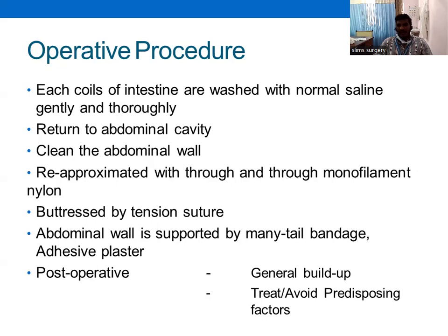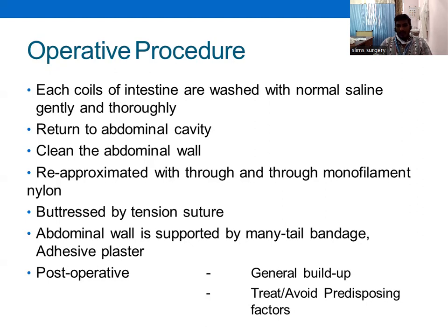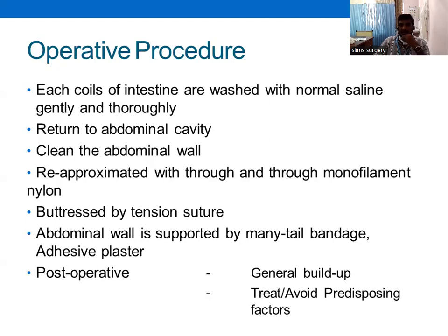Different closure techniques can be used including buttress suturing or tension sutures. The abdominal wall is supported with a many-tailed bandage or adhesive plaster post-operatively. After closure, apply a good abdominal binder, use abdominal plaster, and focus on building up the patient for better wound healing while avoiding predisposing factors.